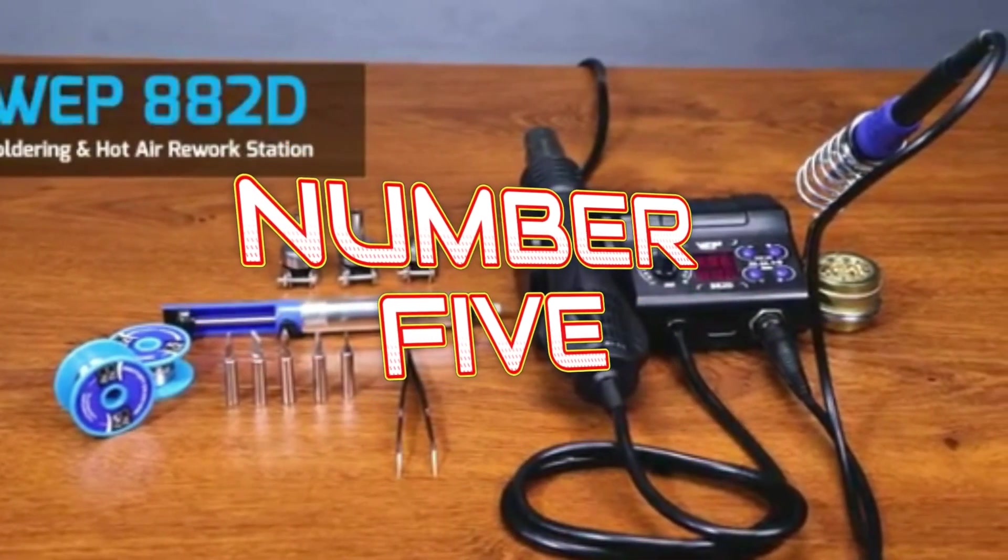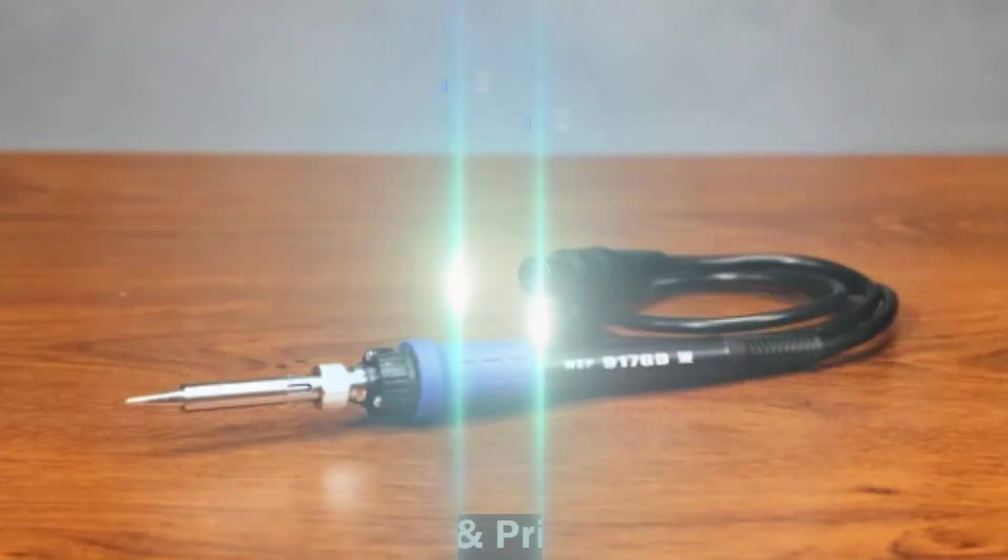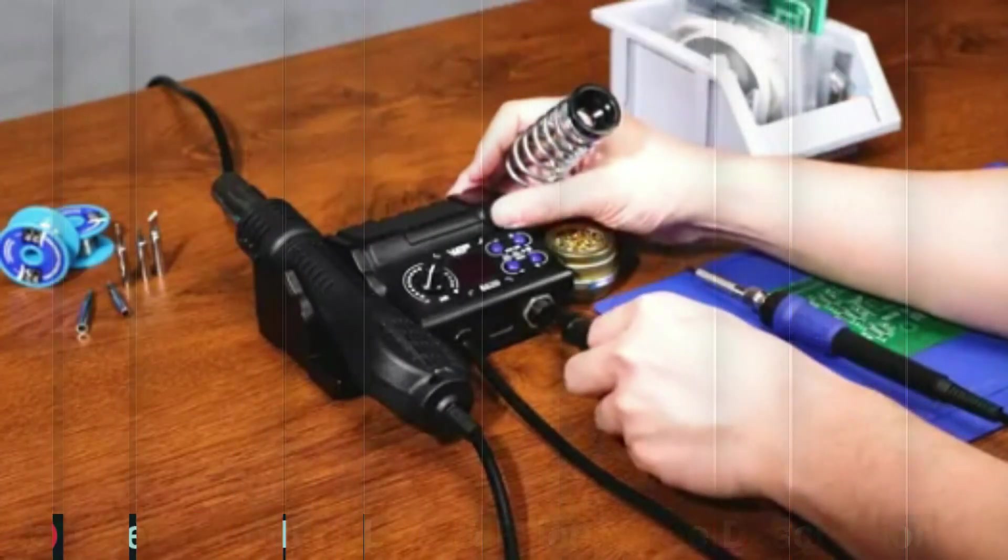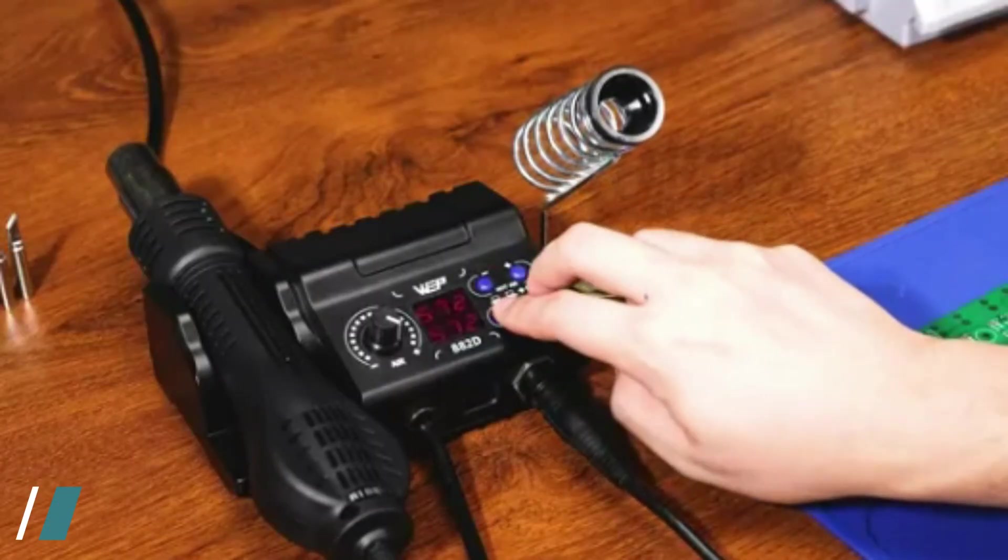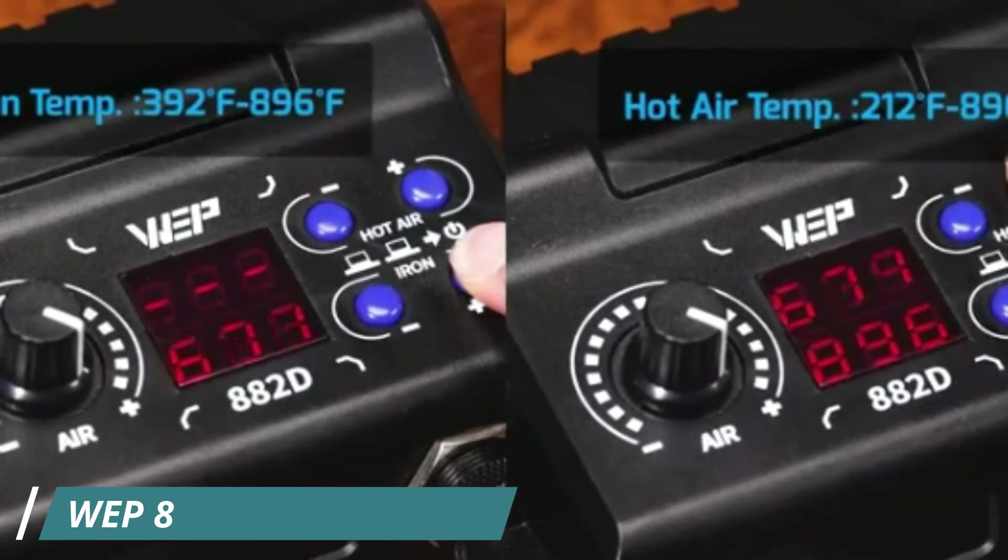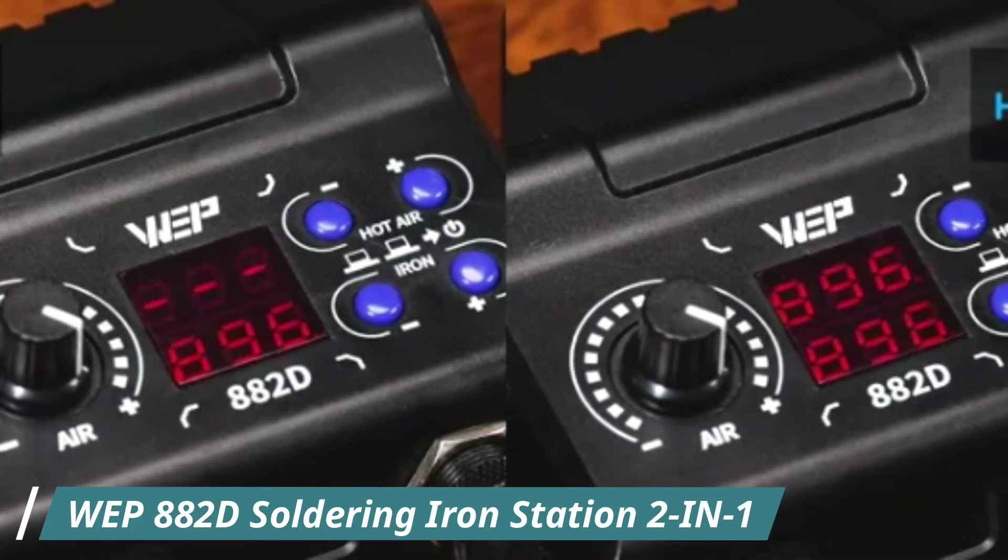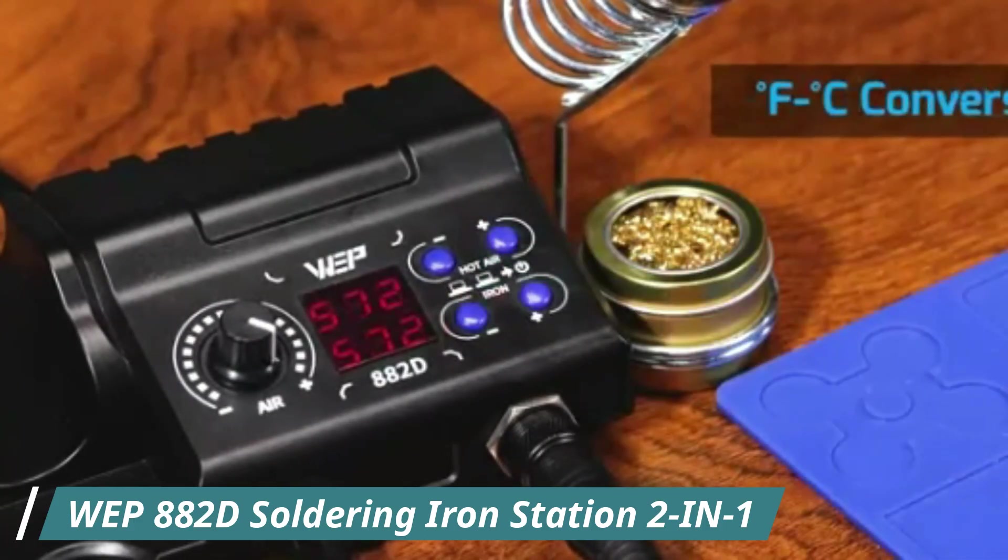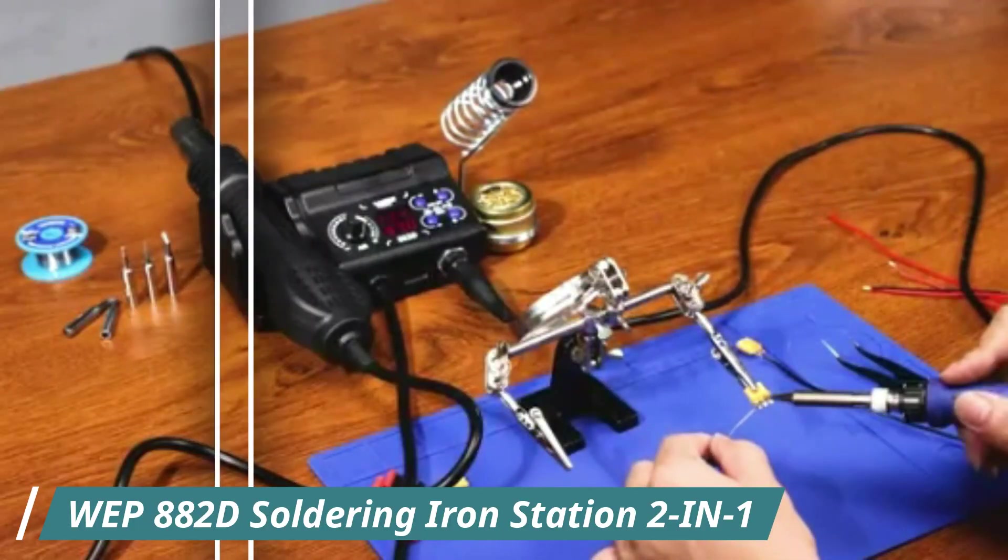Our fifth pick is WEP882 desoldering iron station two in one. One of the standout features of this unit is the dual functionality: a precise soldering iron paired with a powerful hot air rework tool. Whether you're replacing surface mount components, desoldering ICs, or simply repairing damaged connections, having both tools in one place greatly enhances efficiency.